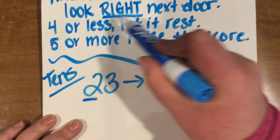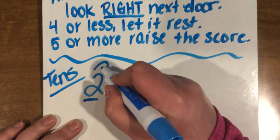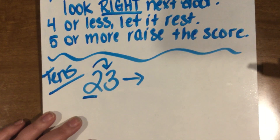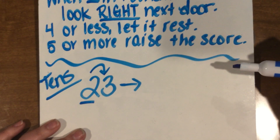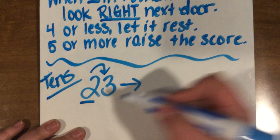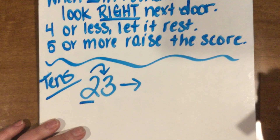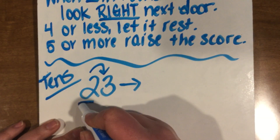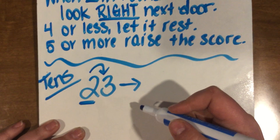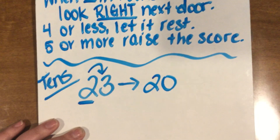Then I'm going to look right next door, and what that means is I'm going to look at the number that's to its right. Is it four or less, or is it five or more? So is three four or less or five or more? In this case, three is four or less, so we're going to let that ten spot rest at twenty. So twenty-three will be rounded to twenty.